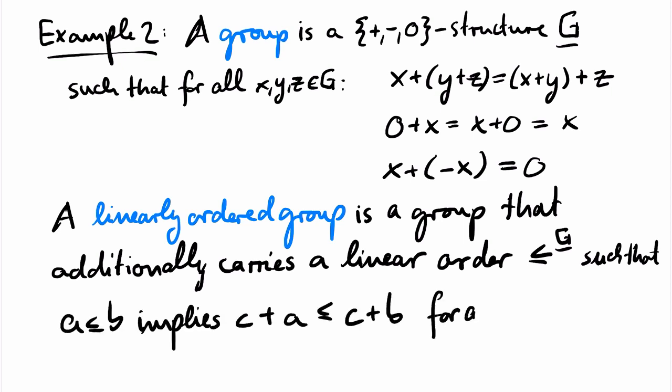then c plus a is less than c plus b for all abc in the group. So this is a property that you know from the additive group of the rationals or reals with respect to the usual ordering.